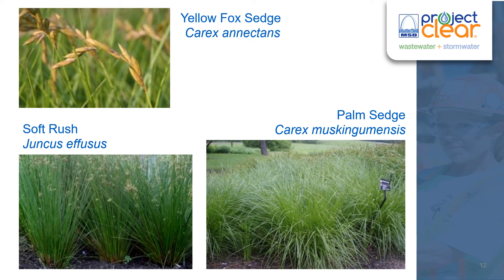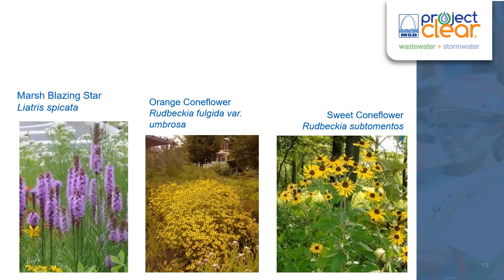Here are just some screenshots: you've got the yellow fox sedge, soft rush in the bottom left, and palm sedge in the bottom right. Referencing bloom time one more time — get that pop and color in your garden. Here are some examples of marsh blazing star, orange coneflower, and sweet coneflower.